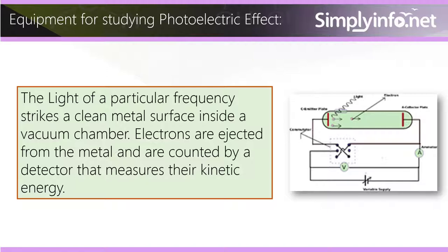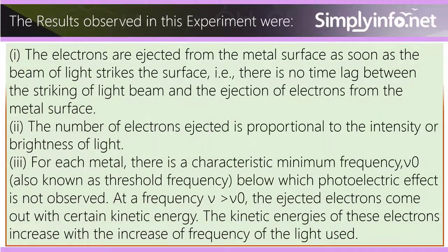The light of a particular frequency strikes a clean metal surface inside a vacuum chamber. Electrons are ejected from the metal and are counted by a detector that measures their kinetic energy. The results observed in this experiment were: